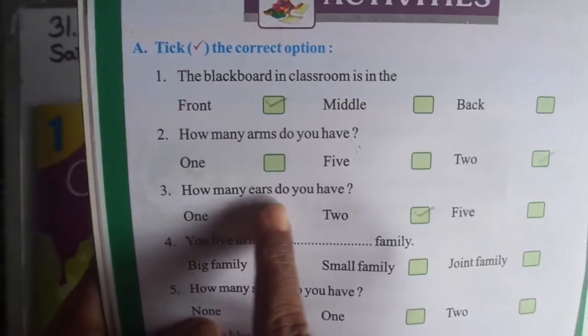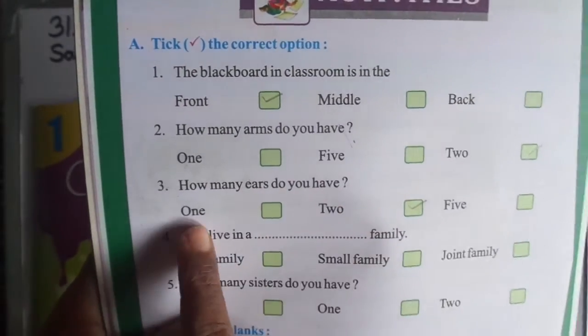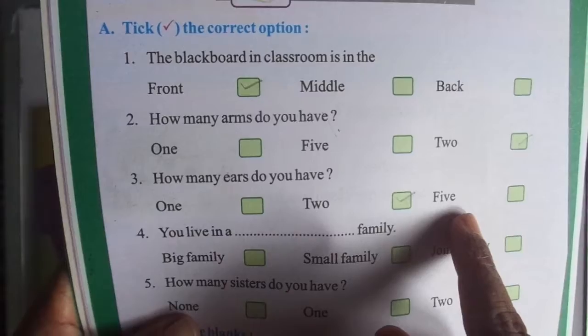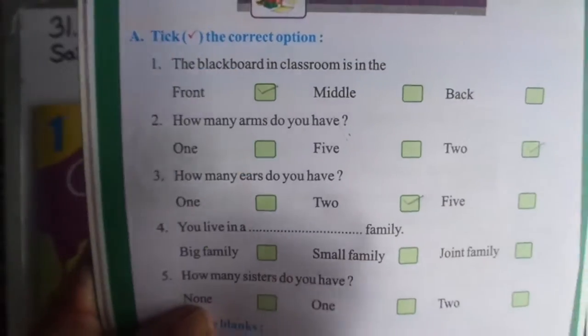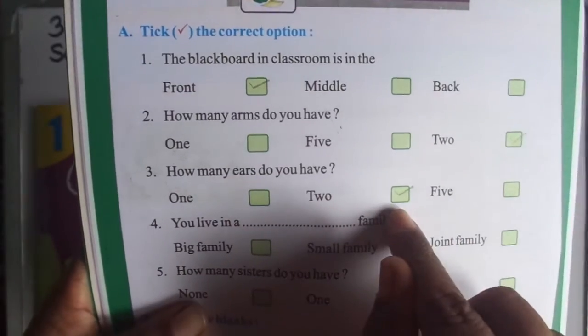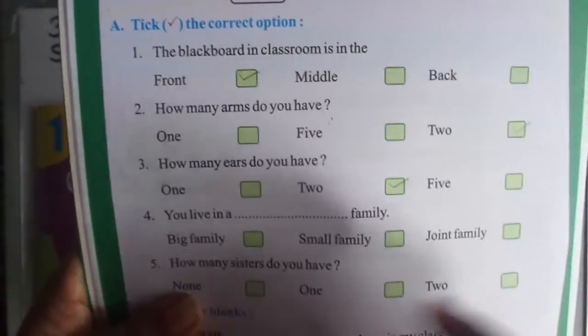Number 3. How many ears do you have? 1, 2, or 5. Ears - 2. So, you take 2. Answer 2.